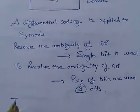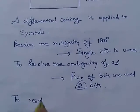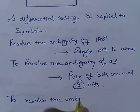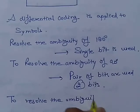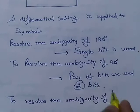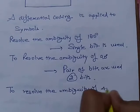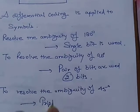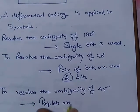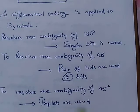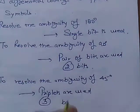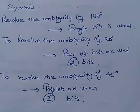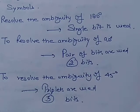Similarly, to resolve the ambiguity of 45 degrees, triplets are used, means combination of three bits. On the basis of this, the inversion of a signal is prevented.